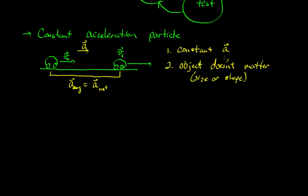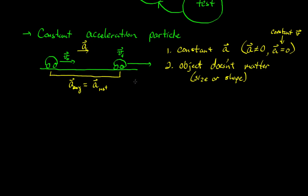Keep in mind that constant acceleration includes both cases: when acceleration is not equal to zero — like three or negative seven — and when acceleration equals zero. That's a special case: if acceleration is zero, it's still constant (constantly zero), but this becomes another model called constant velocity. Constant velocity is a special case of this more general constant acceleration model.